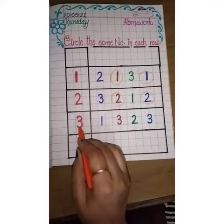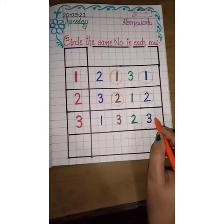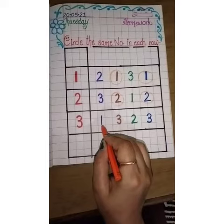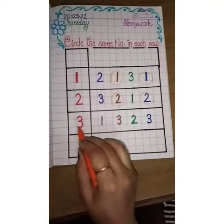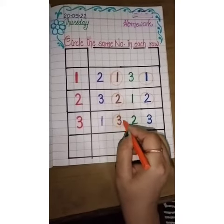Which number is this? It is three. Now we will find number three in this row and circle it. Which number is this? It is one. We will not circle number one. It is three. Both numbers are the same. We will circle it.